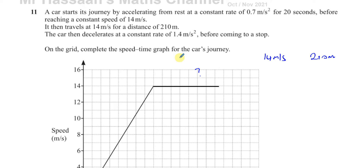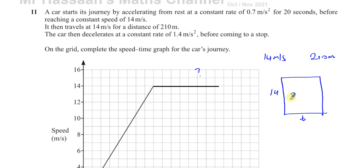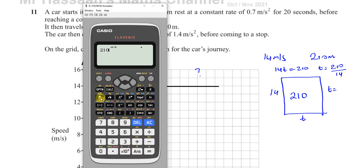We know that the area under a speed-time graph tells us the distance travelled. Since this section has a constant speed of 14 m/s, it forms a rectangle, so 14 times t equals 210. Therefore t equals 210 divided by 14, which gives us 15 seconds.